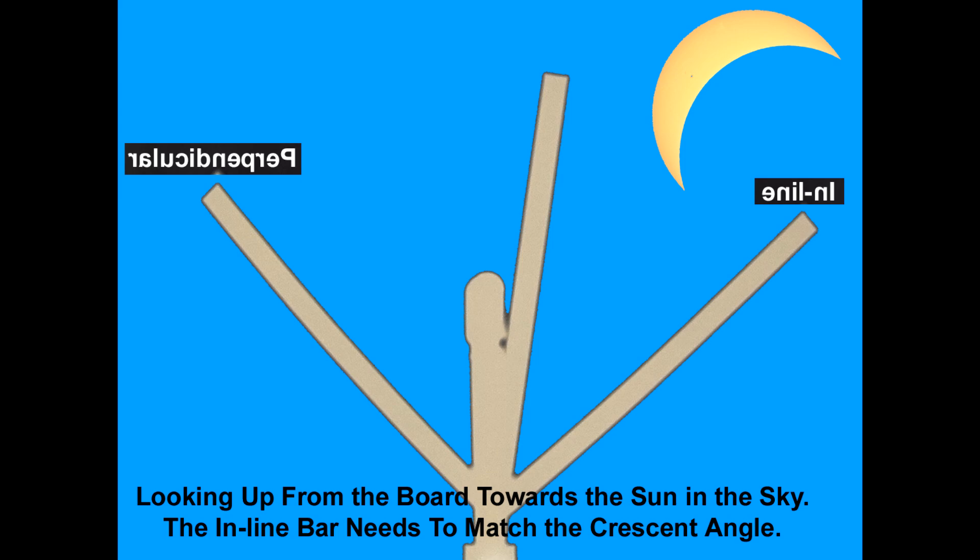The important thing is the inline bar has to be in line with the crescent with respect to looking at the sky. So this is looking up from behind the bars.